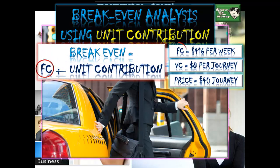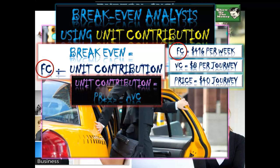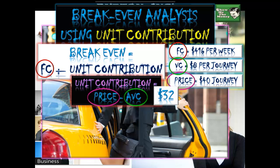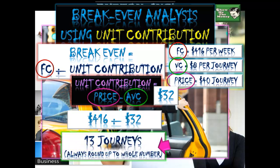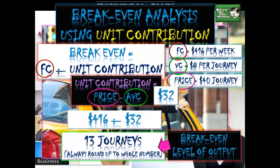I'm going to use unit contribution — the simplest method; you're just plugging numbers into your calculator. Unit contribution = price − average variable cost = $40 − $8 = $32. Fixed cost ÷ unit contribution = $416 ÷ $32 = 13 journeys. Always round up to the whole number — just like payback period, we don't talk about 0.8 of a unit. Round it up.